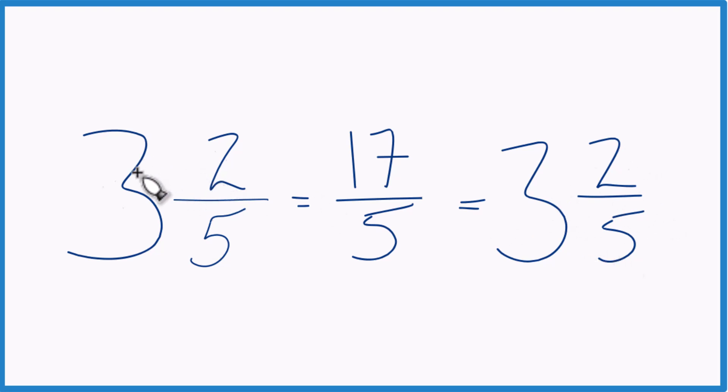That's the same thing we started with. And these are equivalent, 3 and 2 fifths, this mixed number, equals 17 fifths, the improper fraction. They have the same value.